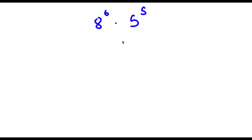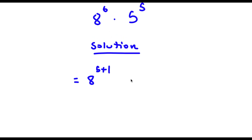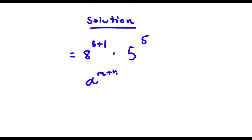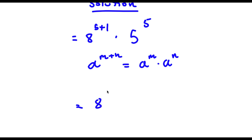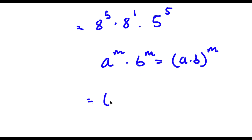So I have 8 to the power of 6 times 5 to the power of 5. I can rewrite 8 to the power of 6 as 8 to the power of (5 plus 1), since 6 is the same thing as 5 plus 1. Using the rule a^(m+n) = a^m × a^n, 8 to the power of (5 plus 1) equals 8 to the power of 5 times 8 to the power of 1. Now I have 8 to the power of 5 times 8 to the power of 1 times 5 to the power of 5.